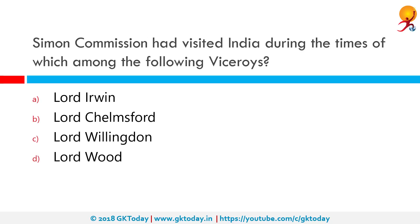The Simon Commission had visited India during the times of which among the following viceroys? The Simon Commission was a group of seven MPs from Britain who were sent to India in 1928 to study constitutional reforms and make recommendations to the government. The commission was originally named the India Statutory Commission, and it came to be known as the Simon Commission after its chairman, Sir John Simon.